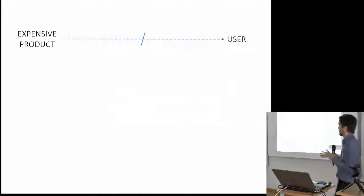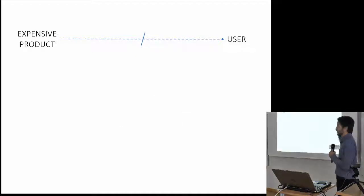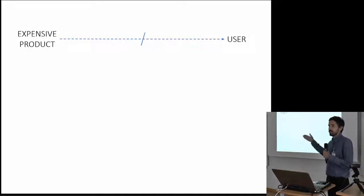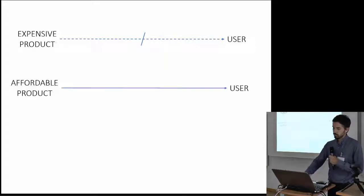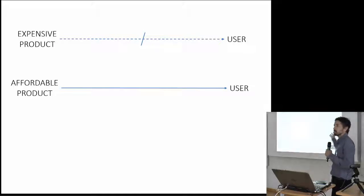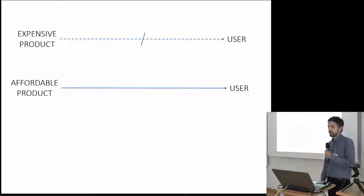In 2014 we were still advocating for low cost phenotyping tools to widen the access, so that more people could have access to this technology. Basically, our idea was that users cannot have access to an expensive product because there's a barrier, and that barrier is the cost. So if you have an affordable product, then many users will get access to that technology.